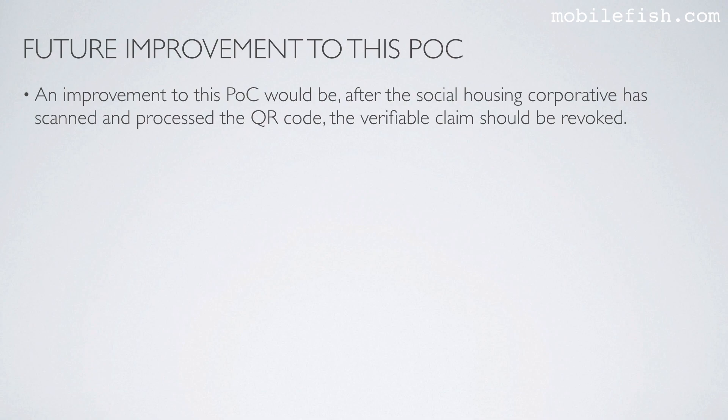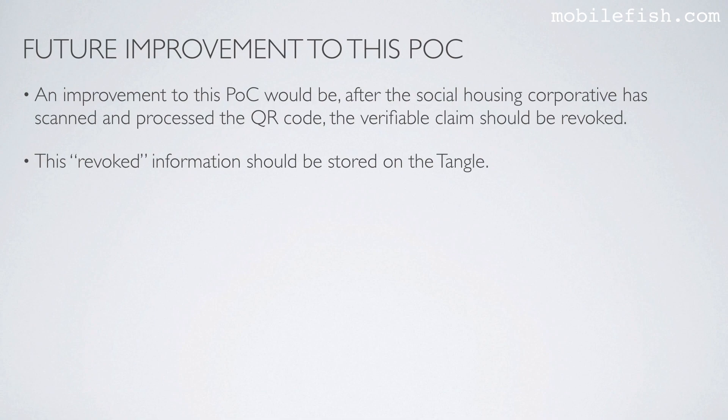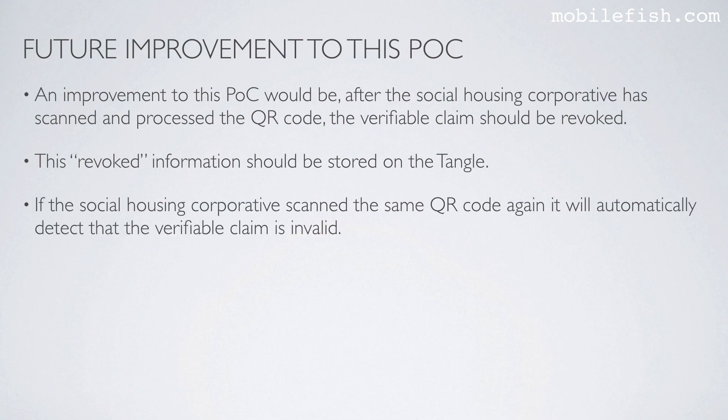An improvement to this proof of concept would be: after the Social Housing Cooperative has scanned and processed the QR code, the verifiable claim should be revoked. This revoked information should be stored on the tangle. If the Social Housing Cooperative scans the same QR code again, it will automatically detect that the verifiable claim is invalid.